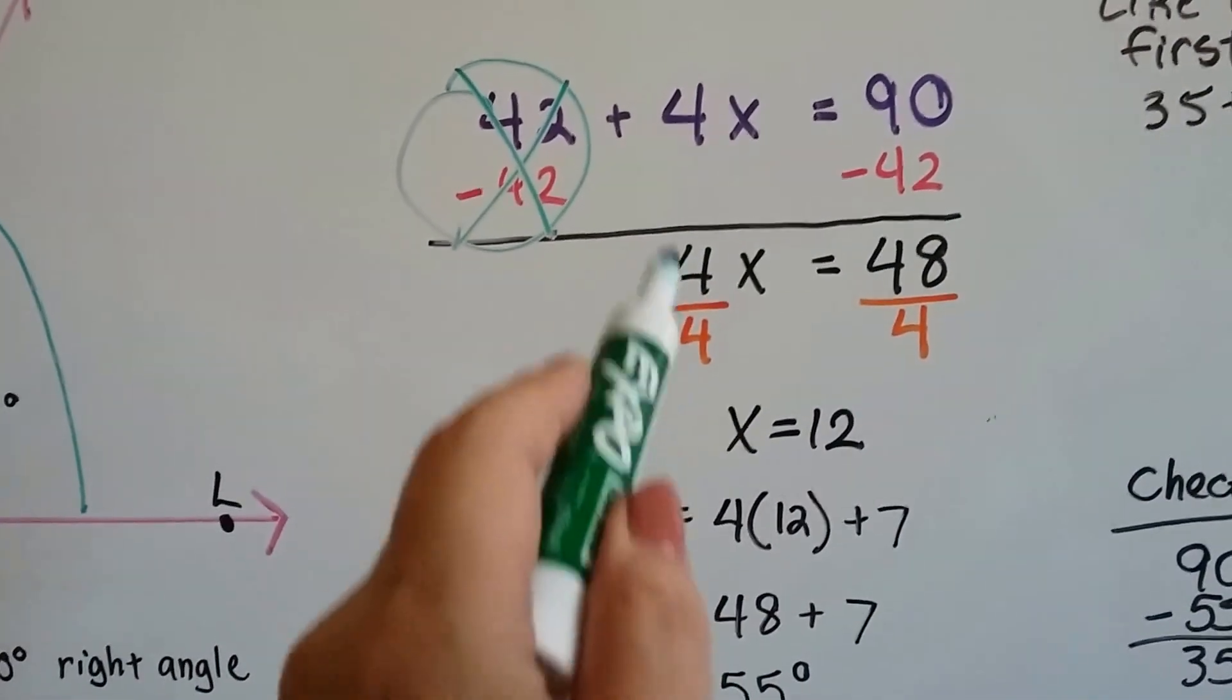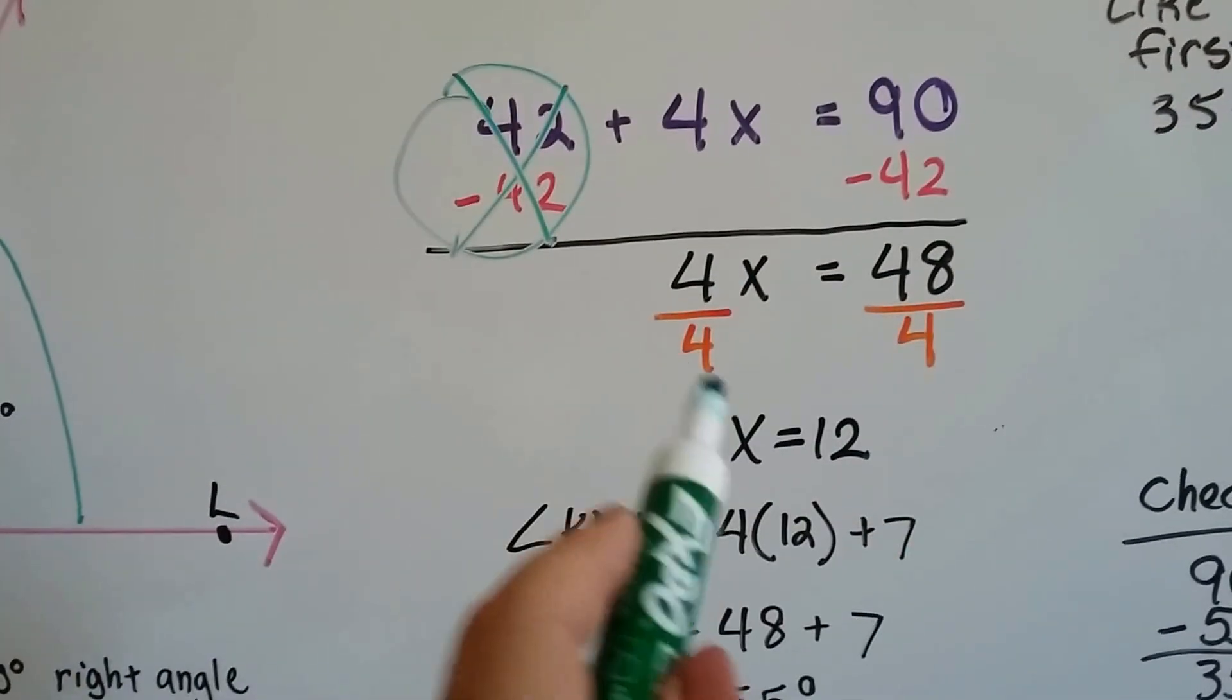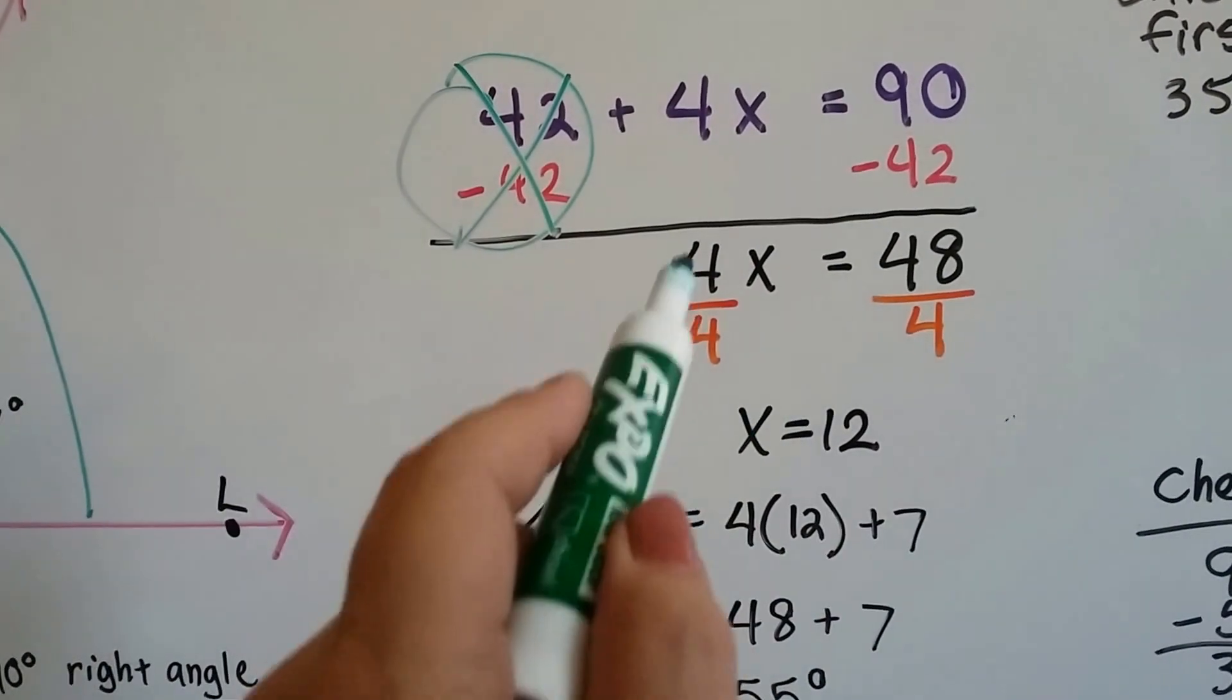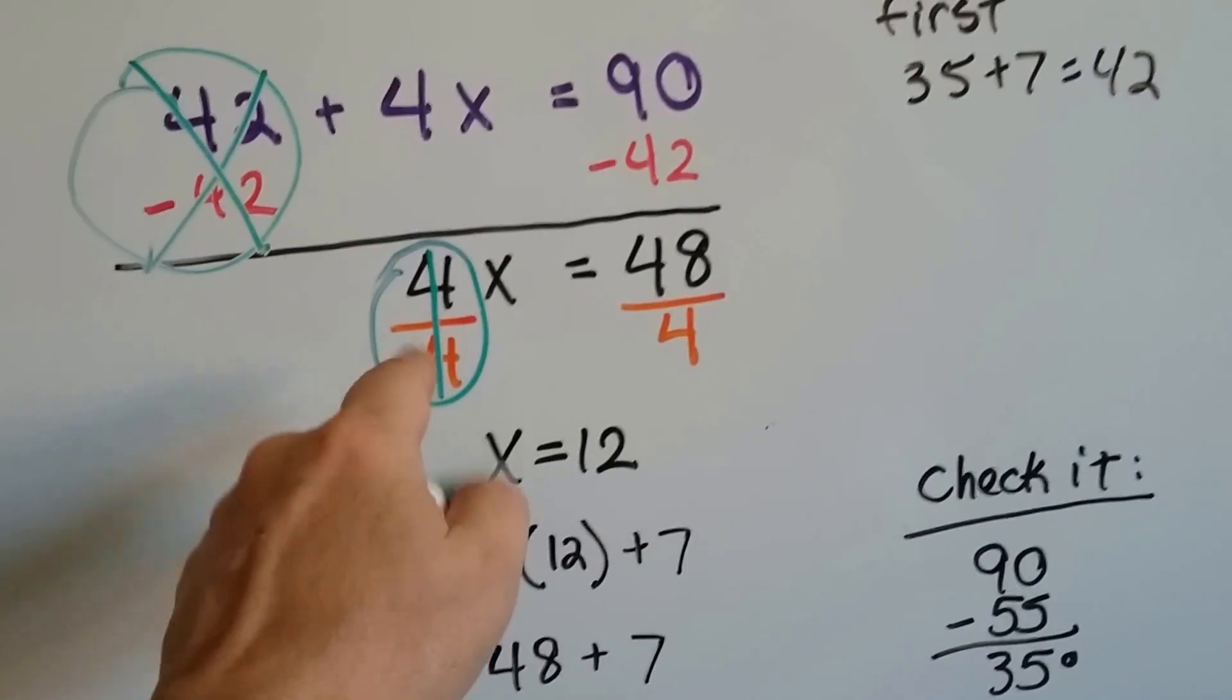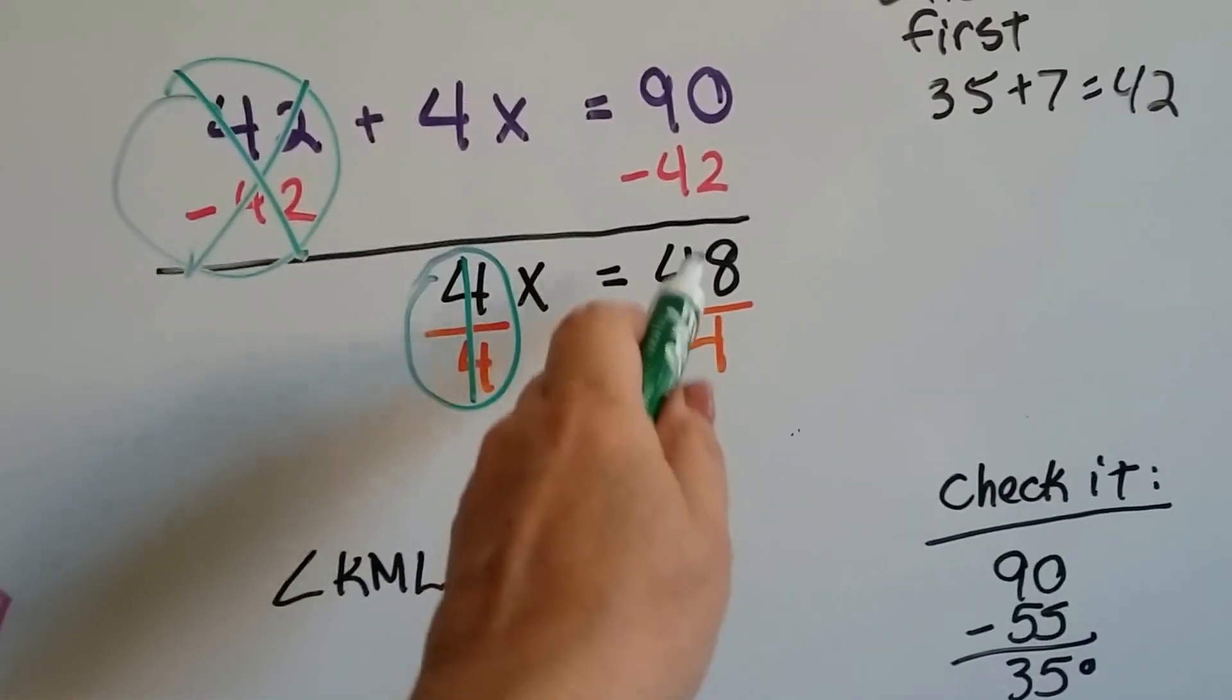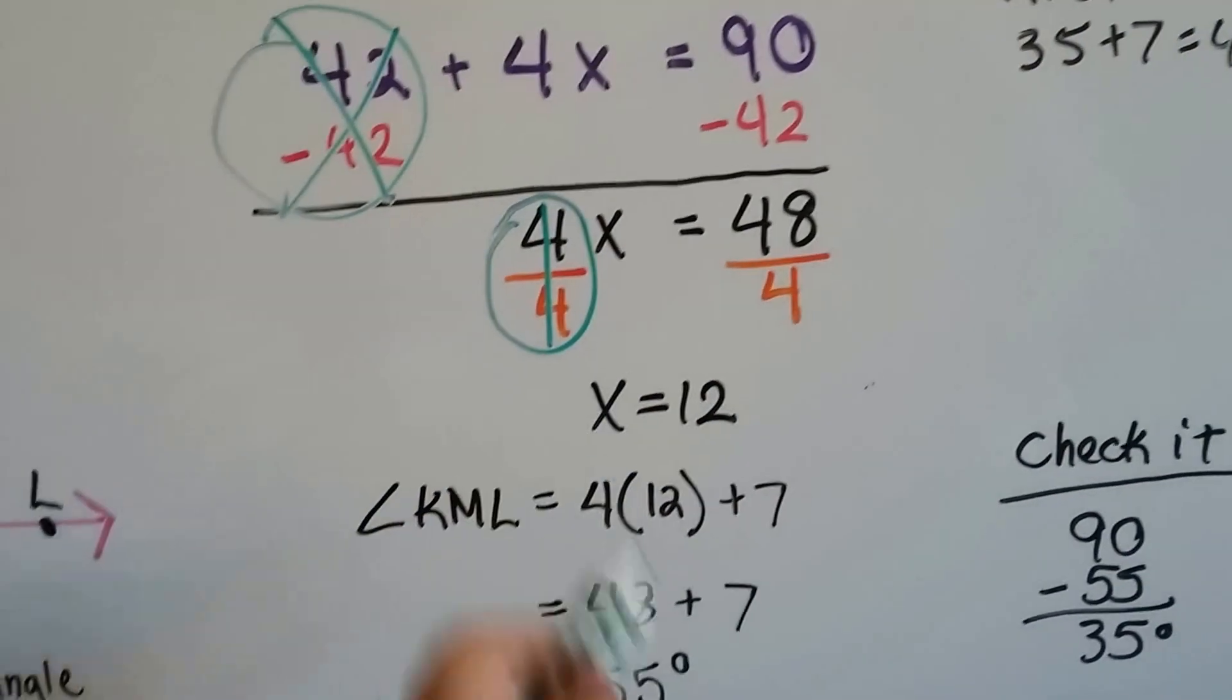Well, we divide both sides by 4 because we want to find out what X is. We divide both sides by 4 and that creates our friend the invisible 1. We have 1X. 48 divided by 4 is 12. So we know X is equal to 12.